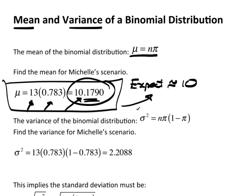The variance — sigma squared — is n times pi, that's the mean, times 1 minus pi. That's the probability of a failure. So this is n, the number of trials, times the probability of success, times the probability of failure. For Michelle's scenario, this is 13 times 0.783 times 1 minus 0.783, which gives you 2.2088.